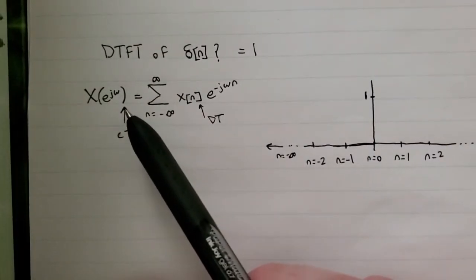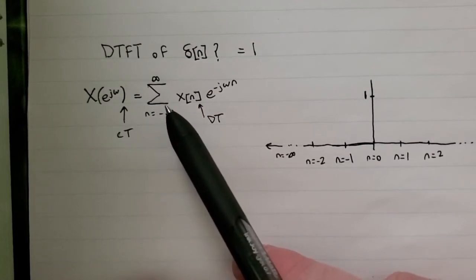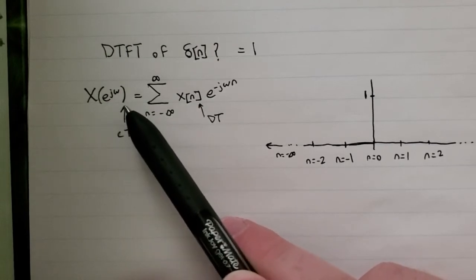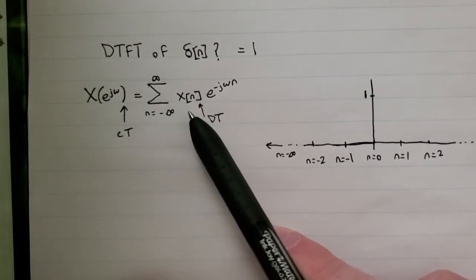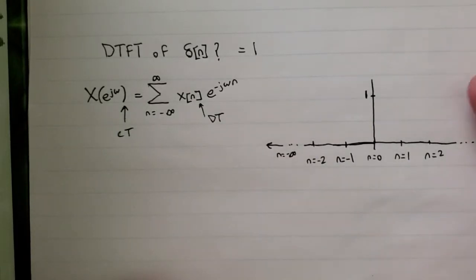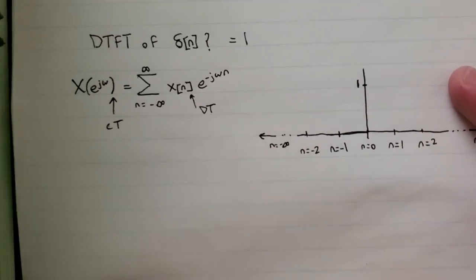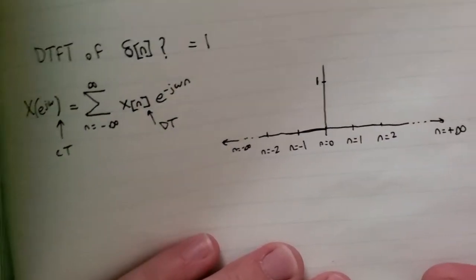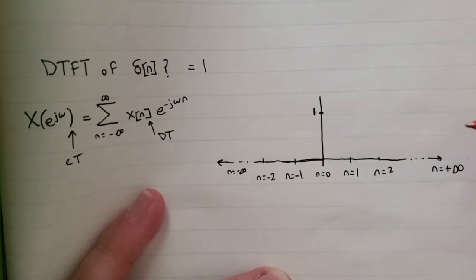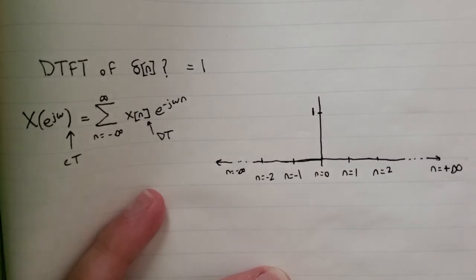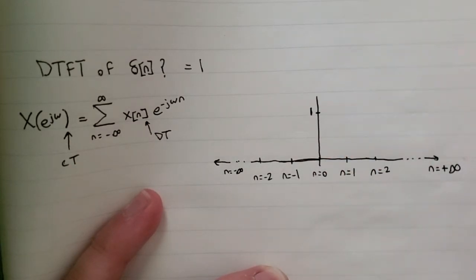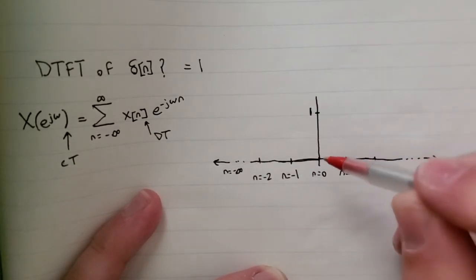This is showing that the output frequency domain signal is continuous. So even though your input signal is discrete, your output is continuous. So if we look at the delta function over here on this graph, we can draw the delta function, and if it's a non-shifted delta function, its value is only going to be greater than zero when n is equal to zero.